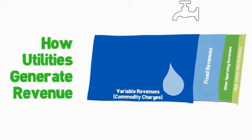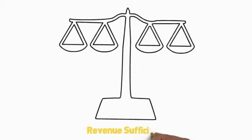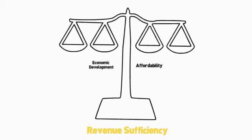Under the predominant business model of most utilities, they are collecting much more variable than fixed revenue. When it comes to designing rate structures and setting rates, utilities usually have to balance multiple objectives. First and foremost, utilities must set rates to collect the revenue they need to operate the water utility and invest in their infrastructure. After that, utilities can and do tweak and tailor the rate structure to meet a number of objectives, including customer affordability, economic development, water conservation, and revenue stability.